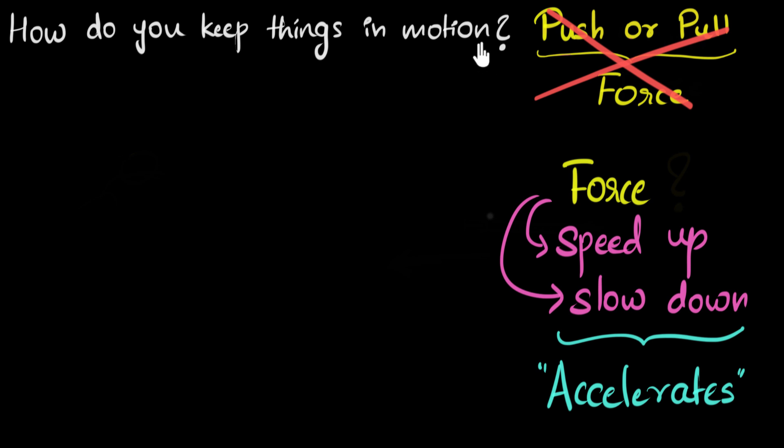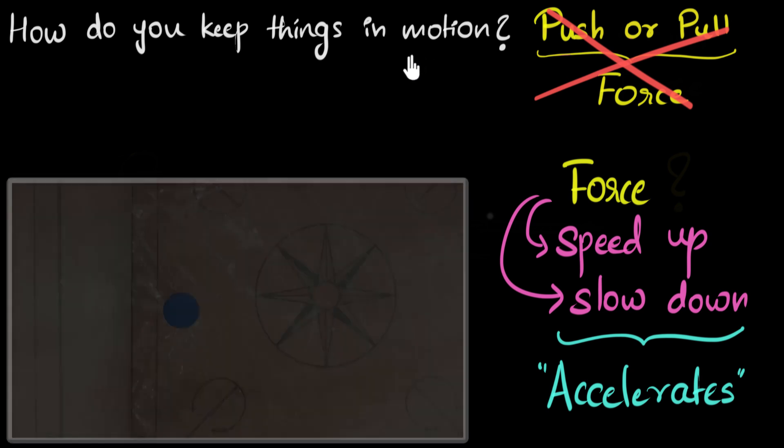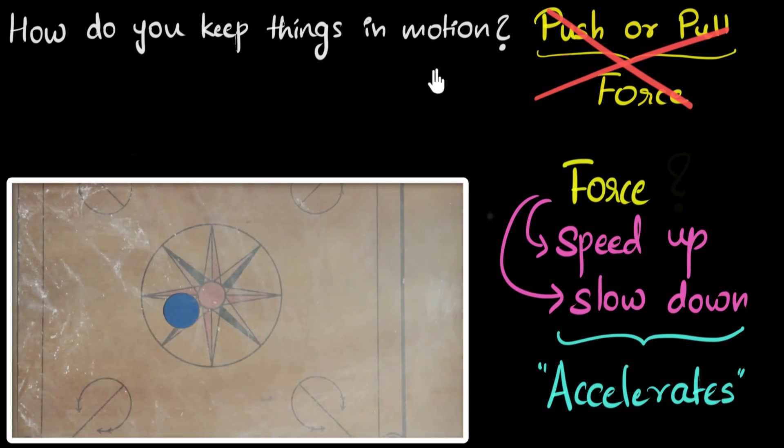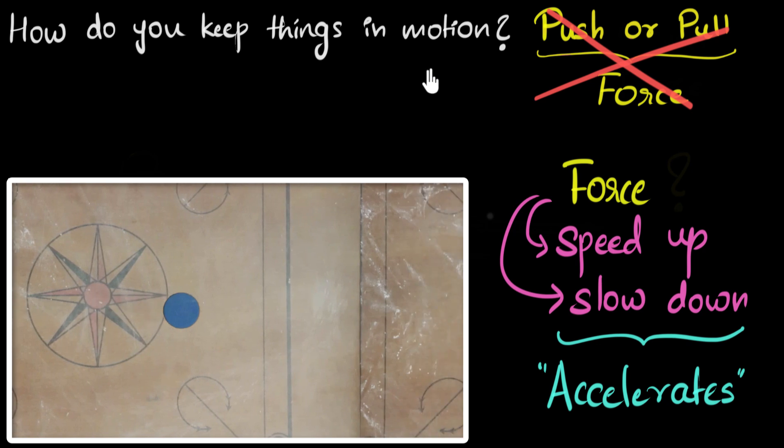And so what did we learn in this video? In this video, we saw that a man named Galileo looked at simple experiments. He looked at them carefully and came up with a revolutionary idea. That things in motion have a natural tendency to stay in motion.